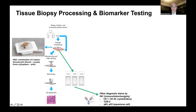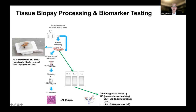This is called immunohistochemistry. It uses antibody technology, as discussed in the principles of immunotherapy segment. These antibodies are not therapeutic — they're not being used to treat the cancer — but rather they're being used to help determine whether there's expression of a given protein. An antibody will be specific to any given protein of interest; for example, an antibody to CK7, which is usually overexpressed in esophageal and gastric cancers. From this panel of testing, the pathologist can come to a clinical diagnosis, which typically takes around three days.